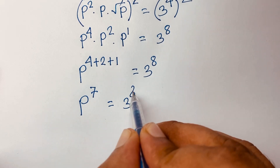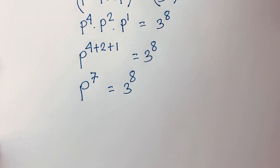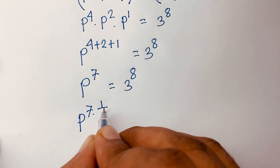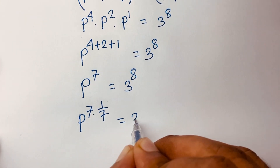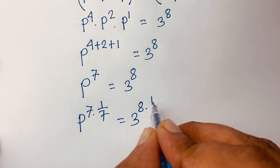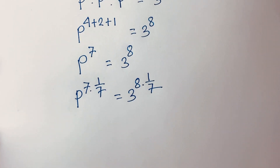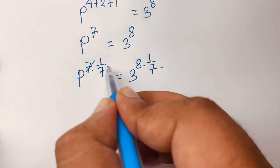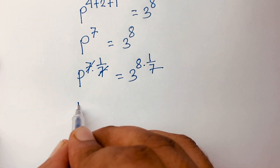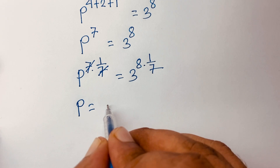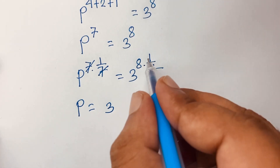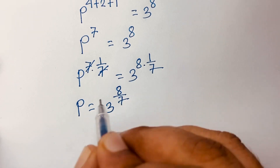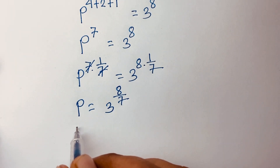So p to the power of 7 equals 3 to the power of 8. I raise both sides to the power of 1 over 7, so the 7 cancels and p equals 3 to the power of 8 times 1 over 7, which is 8 over 7.